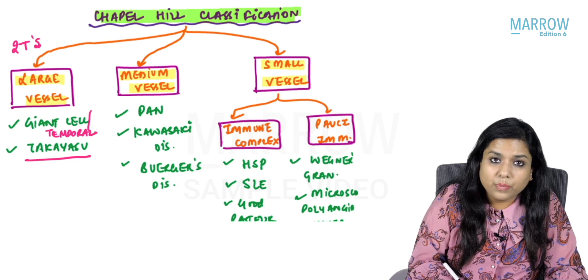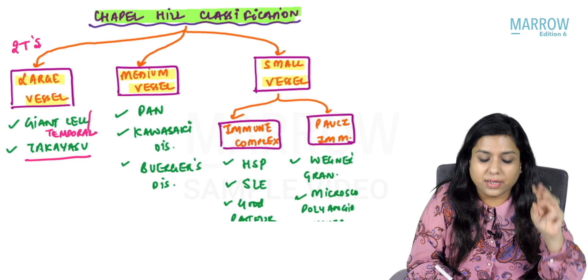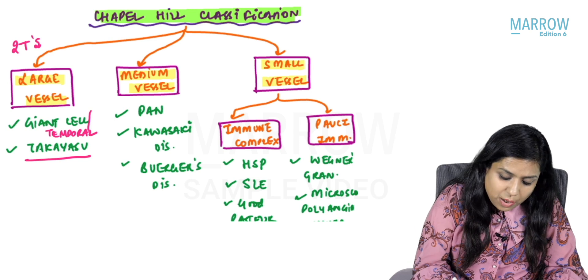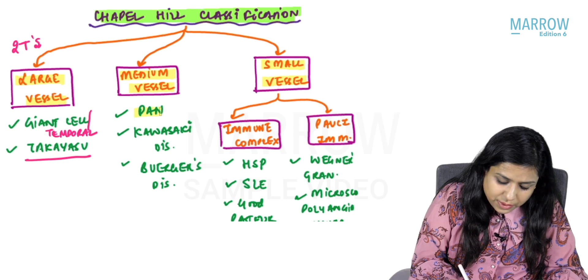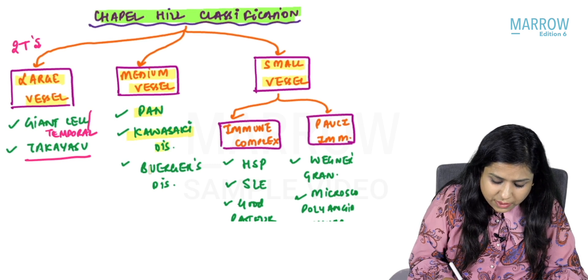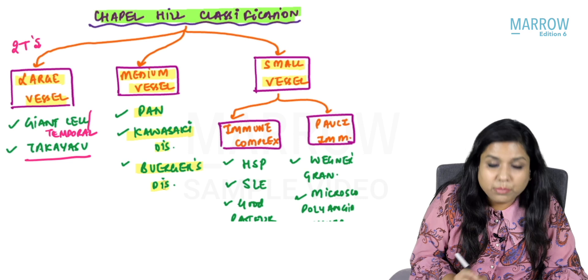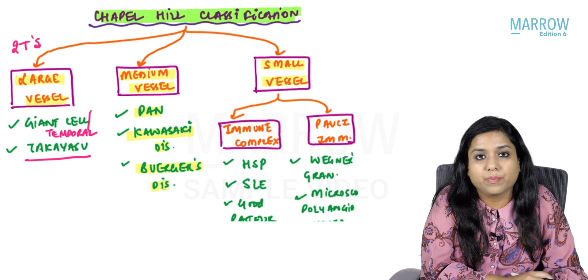For medium vessel vasculitis, we have three entities: polyarteritis nodosa, Kawasaki disease, and Buerger's disease.